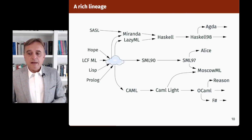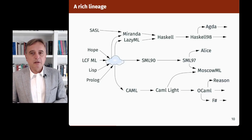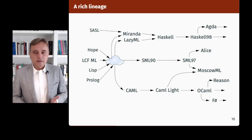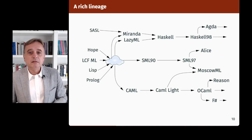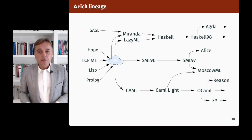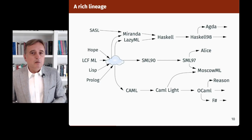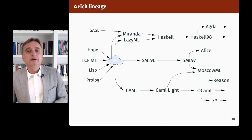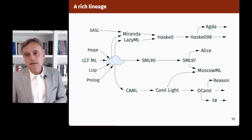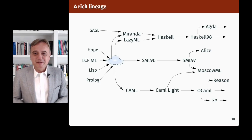From that initial design emerged an incredible number of languages — it was kind of a primordial soup from which emerged at least three lines of typed functional languages. One was Standard ML, led by Milner at Edinburgh, moving towards standardization and formal definition, and also adding modules. Another was the pure functional programming line with early languages like Miranda and Lazy ML, converging around Haskell in 1992. And the third is the CAMEL branch — the French branch — which we are going to talk more about today.